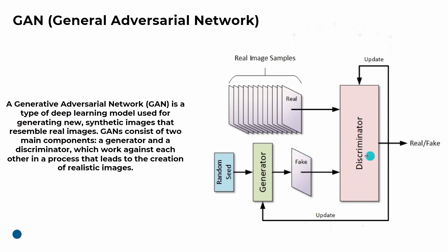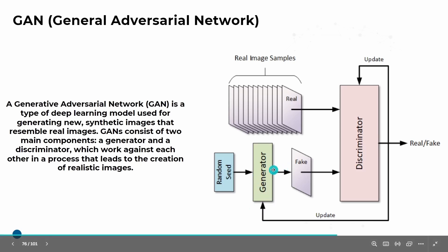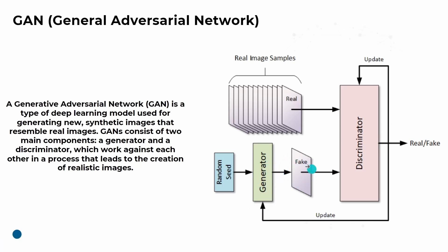Based on what the discriminator has learned about real images, it classifies the generated image as real or fake. A loss function is calculated, and that feedback is fed to the generator. Based on this feedback, the generator improves and generates new images, which are fed back to the discriminator for classification. This process happens again and again - like a cat and mouse competition where both try to compete with each other.